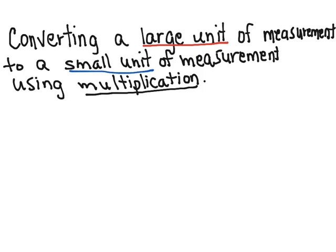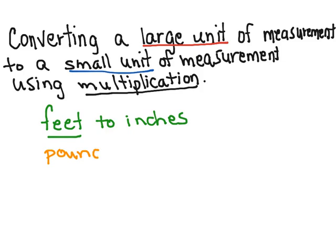For example, if we want to change feet, which is a larger unit, to inches, we're going to use multiplication. If we want to change pounds to ounces, pounds is a larger unit, ounces is a smaller unit, we're going to use multiplication.